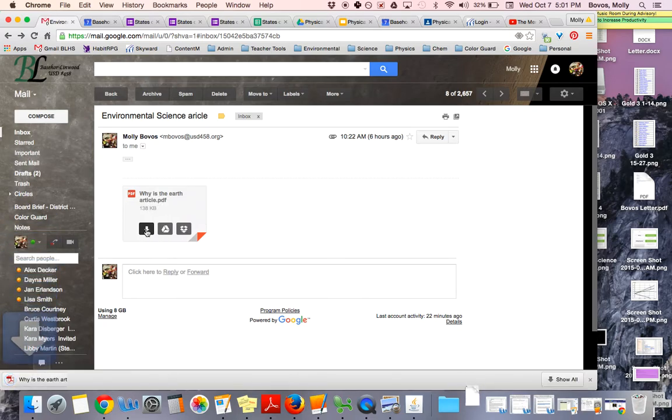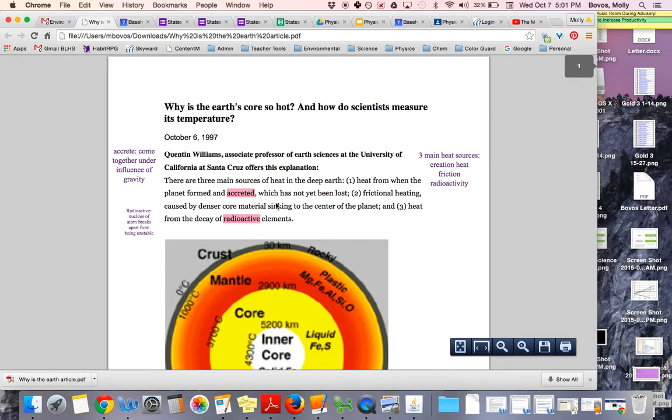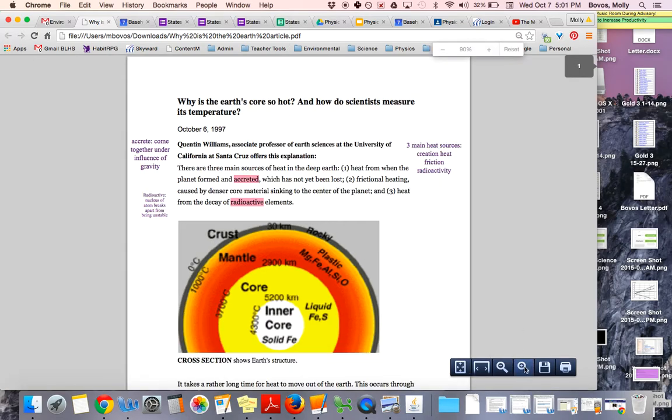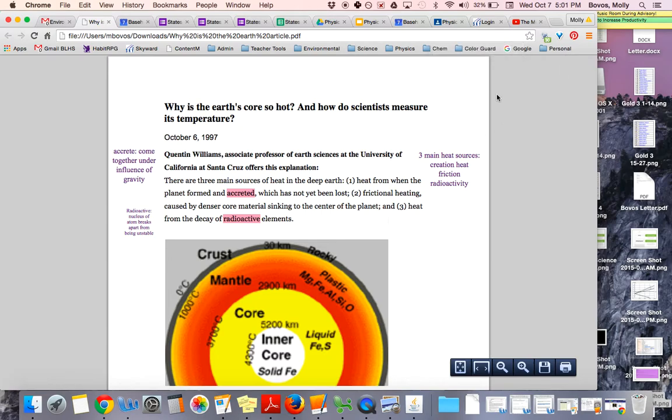You can also hit the download button, download the article, and I can click here and I can view the article, but I still don't have any tools. I can zoom out and zoom in, but I don't actually have the tools to annotate.